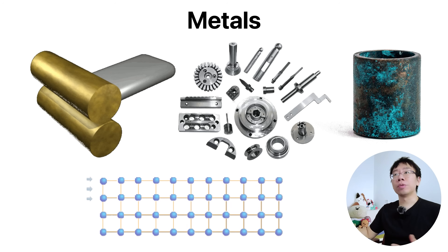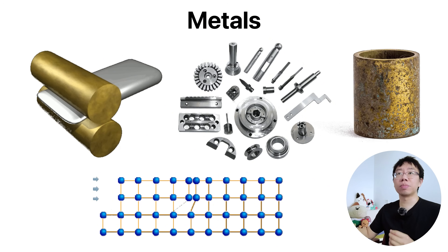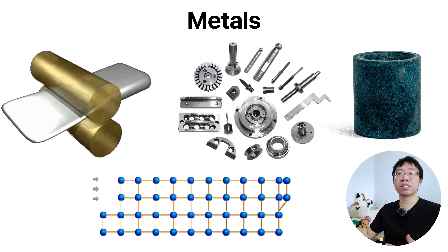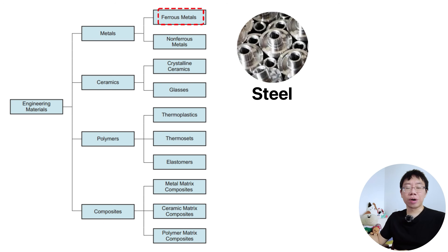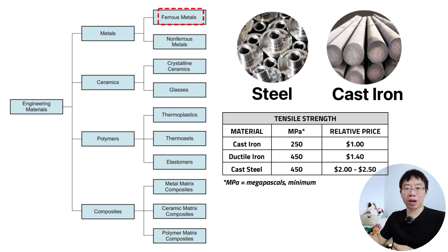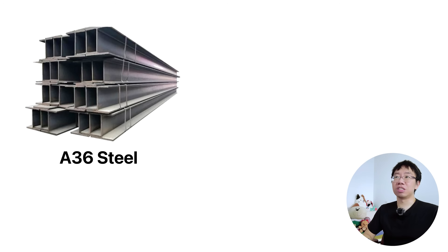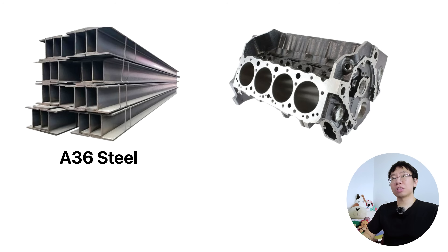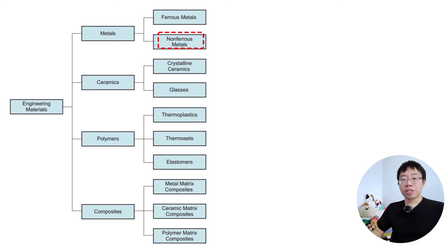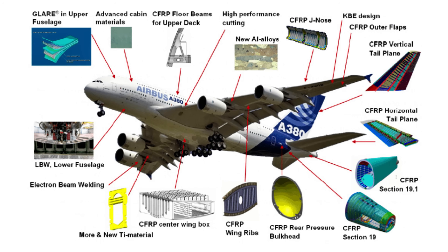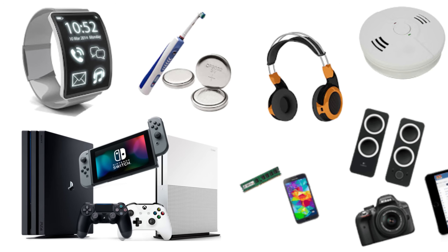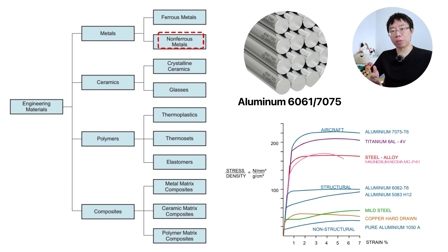Metals form the backbone of mechanical engineering. They offer a predictable balance of strength, stiffness, toughness, thermal conductivity, and manufacturability. Various alloys like steel and cast iron are used where cost-effective strength and stiffness are paramount — think structural I-beams made from A36 steel or automotive engine blocks made from gray cast iron where vibration damping is required. Non-ferrous alloys like aluminum 6061 or 7075 are standard for aerospace applications and portable electronics due to their relatively high strength-to-weight ratio.